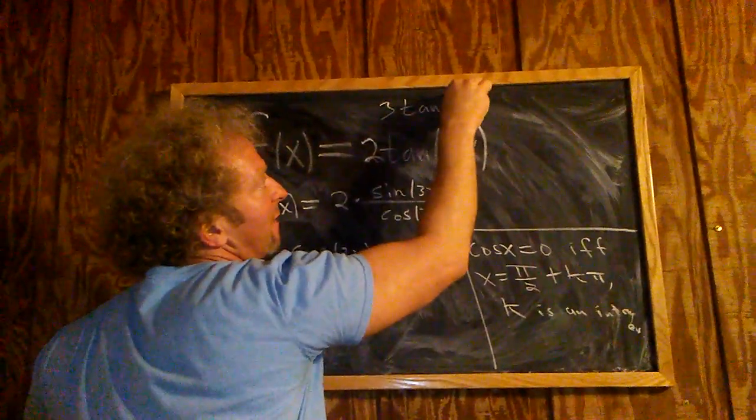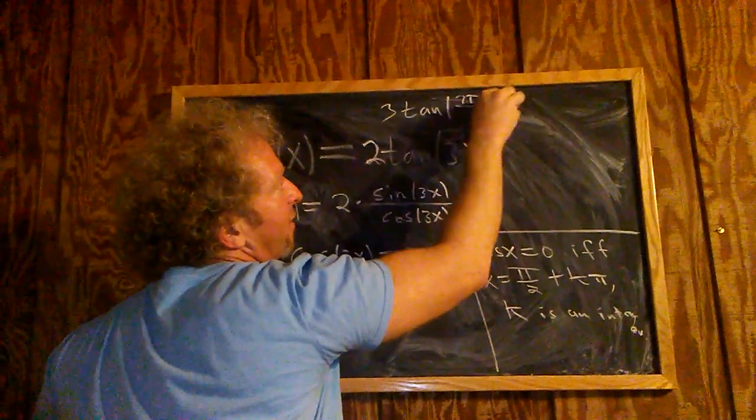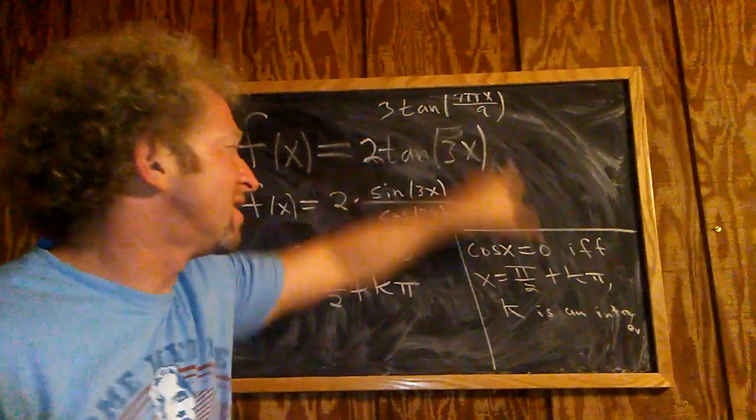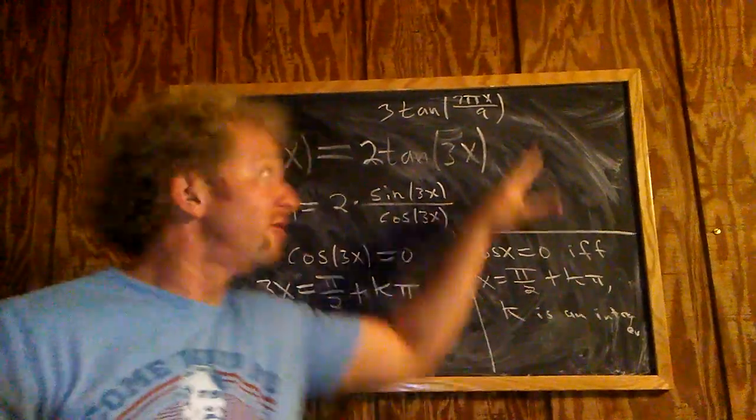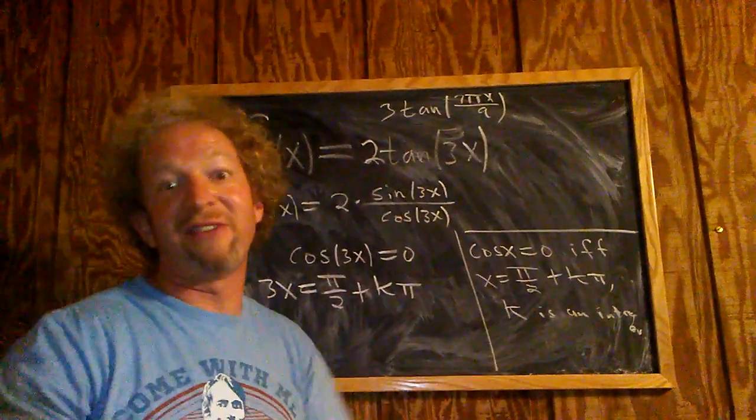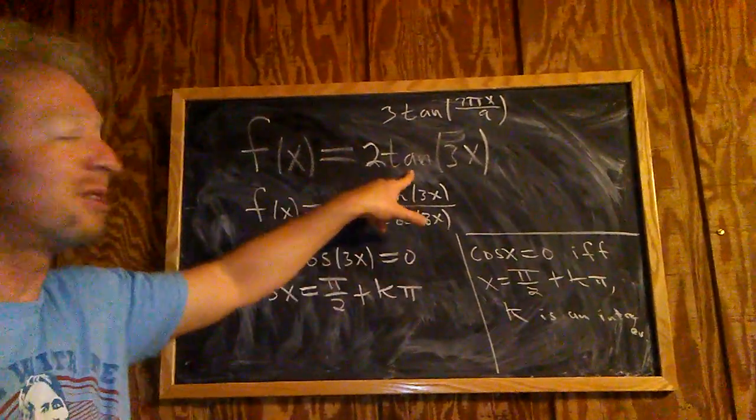If I had 10... 7 pi x over 9... you would just take 7 pi x over 9 and set it equal to pi over 2 plus k pi. Just take whatever is here and set it equal to this, every single time. That always works whenever cosine is on the bottom.